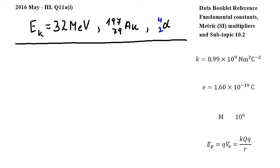In this question, an alpha particle is fired at a gold nucleus, and we have to show that the distance of closest approach is approximately 7 times 10 to the power of negative 15 meters.